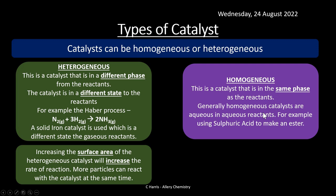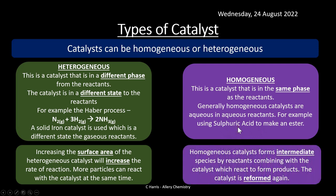Homogeneous catalysts are in the same phase as the reactants — generally aqueous solutions. A classic example is using sulfuric acid (aqueous) to catalyze the formation of an ester from a carboxylic acid. Homogeneous catalysts work by forming an intermediate species: the reactants combine with the catalyst to form products, and then the catalyst is reformed. With heterogeneous catalysts, substances attach to the solid surface and then desorb later.